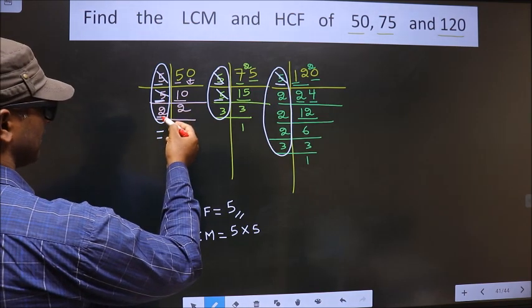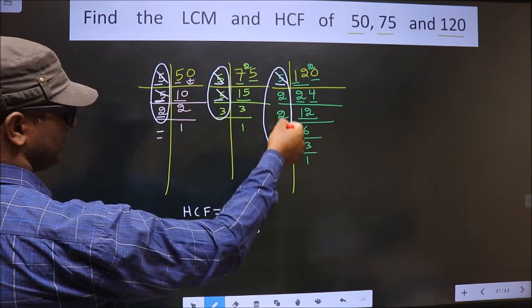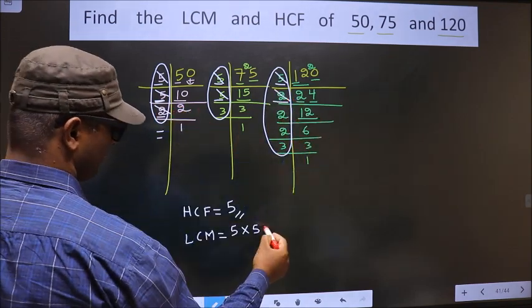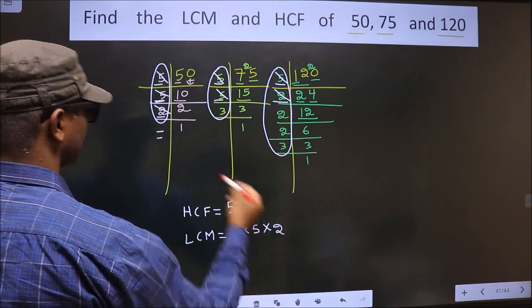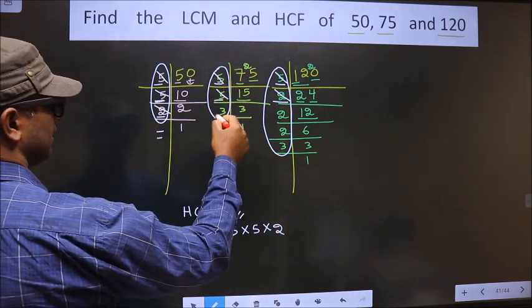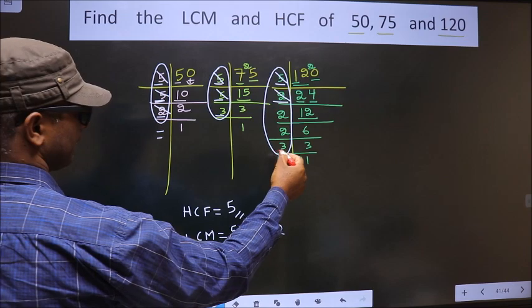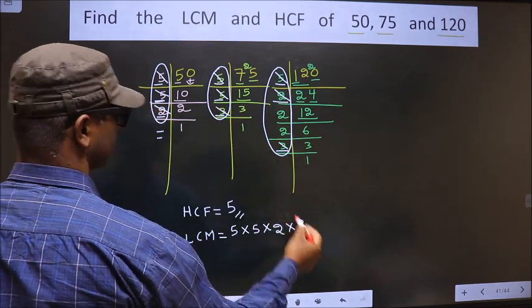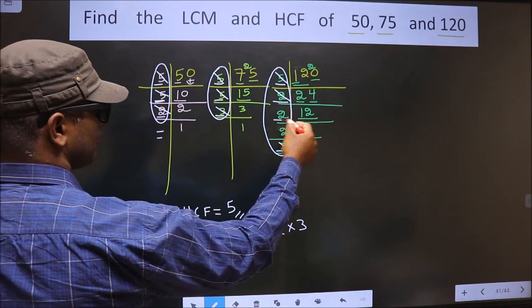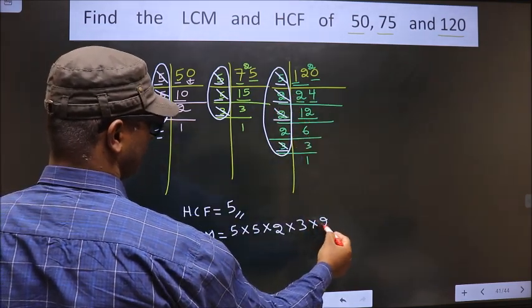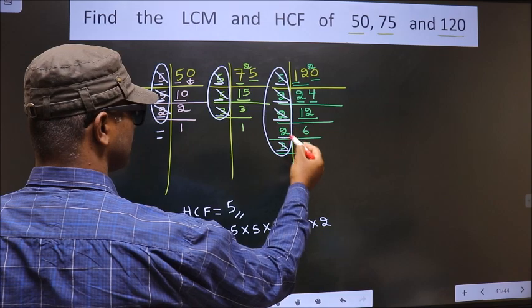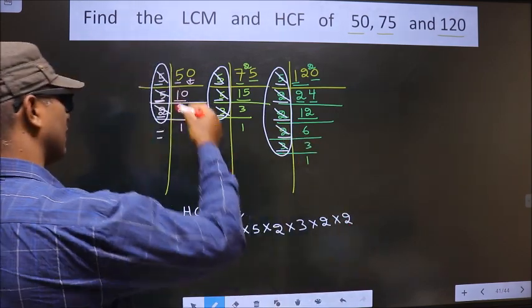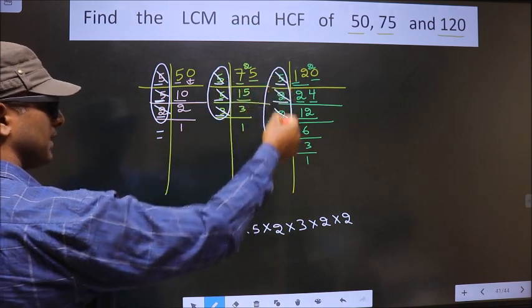Next. Now next number is 2. Do we have 2 here? No. Do we have 2 here? Yes. So you cut 2 right here. Now here 3. Do we have 3 here? Yes. So you cut 3 right here. Now here 2 is not cut. So you cut 2 right here. Now one more 2 is not cut. So you cut and write here. Now each number has been cut.